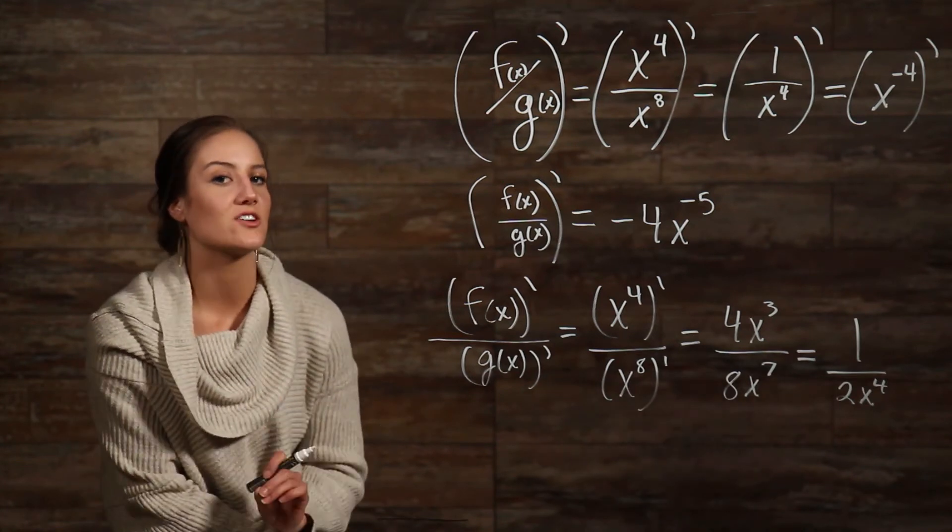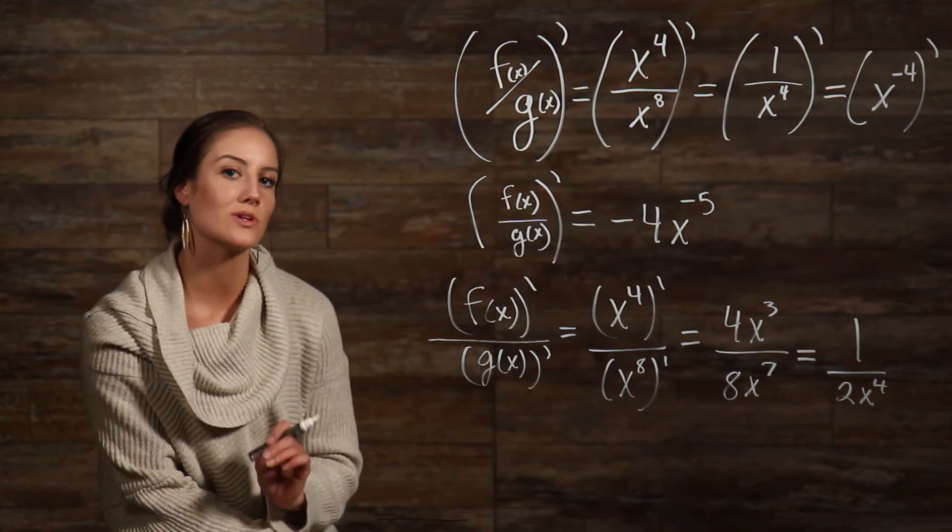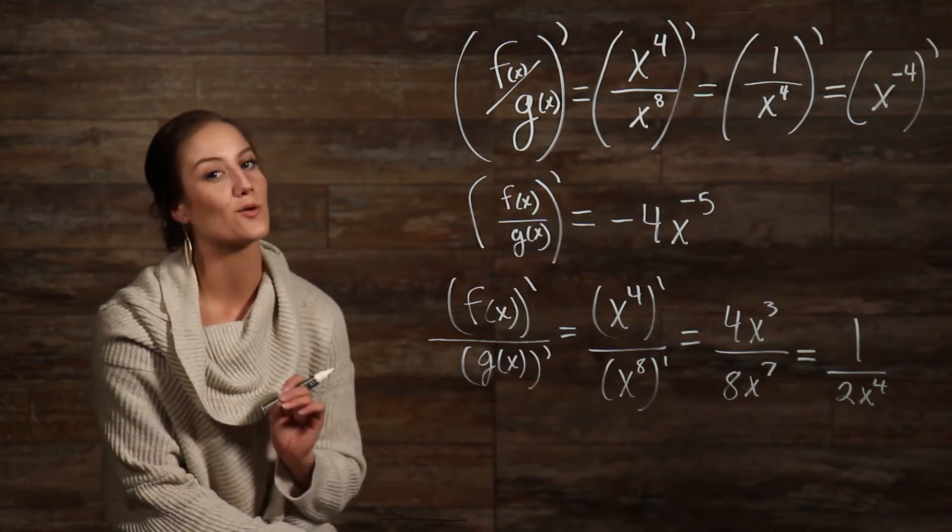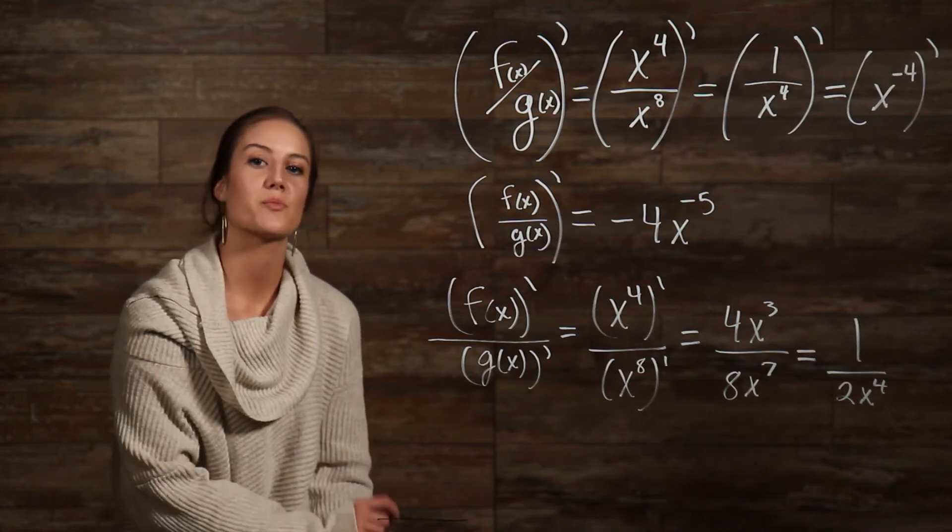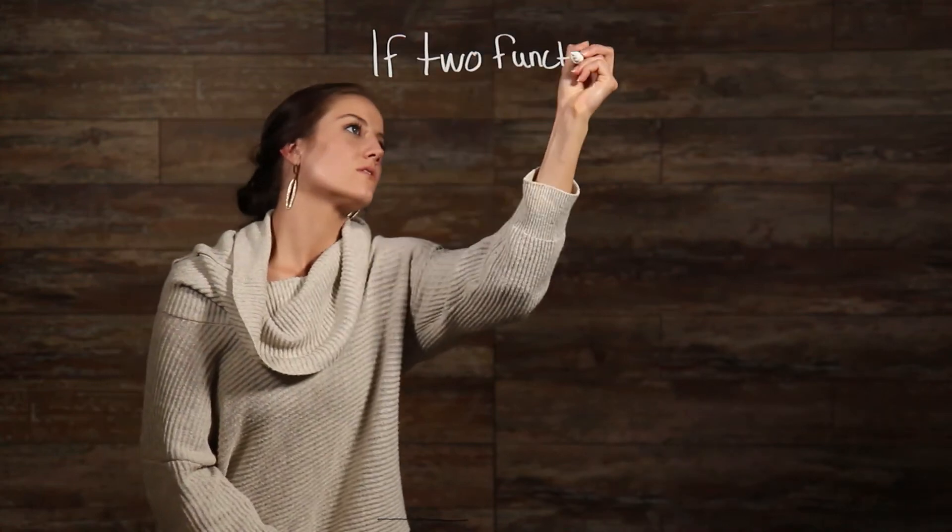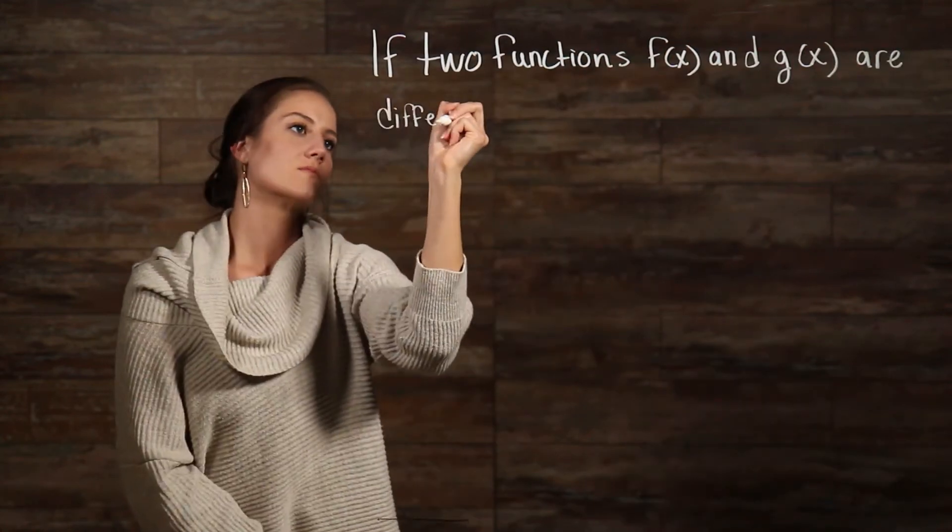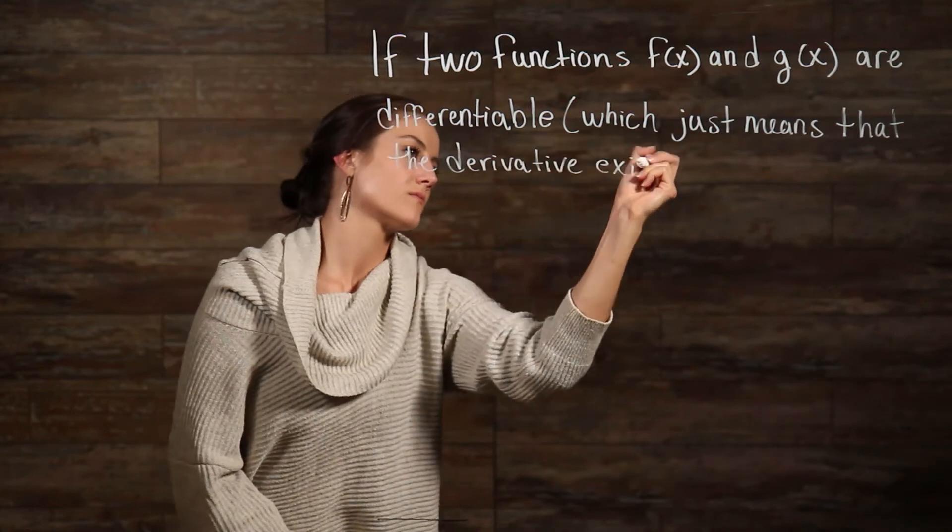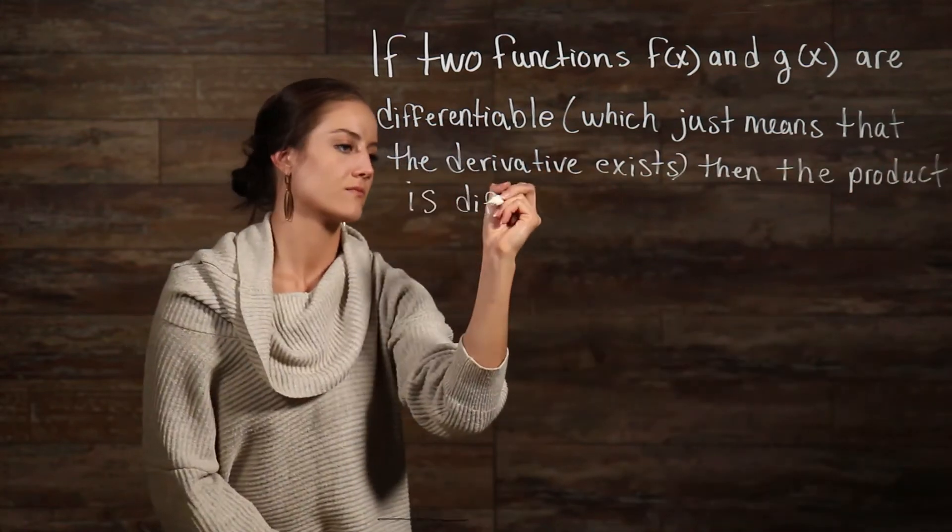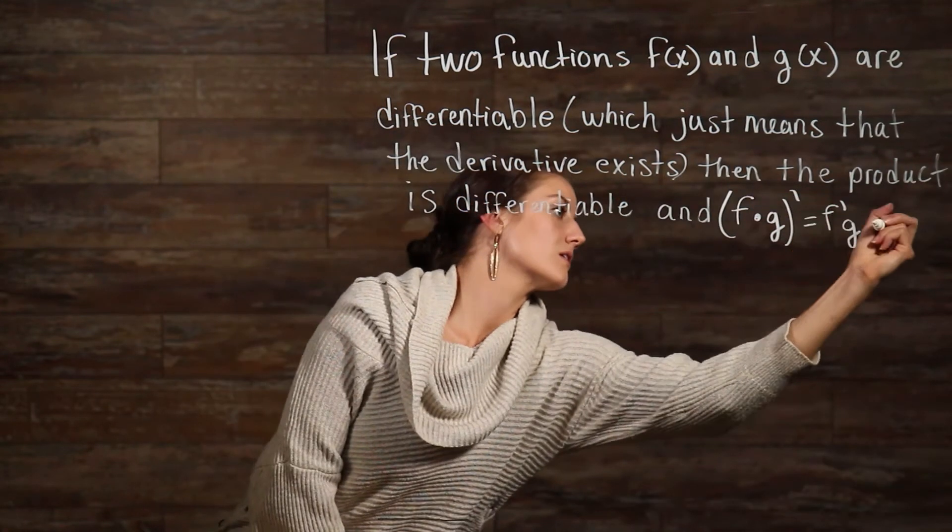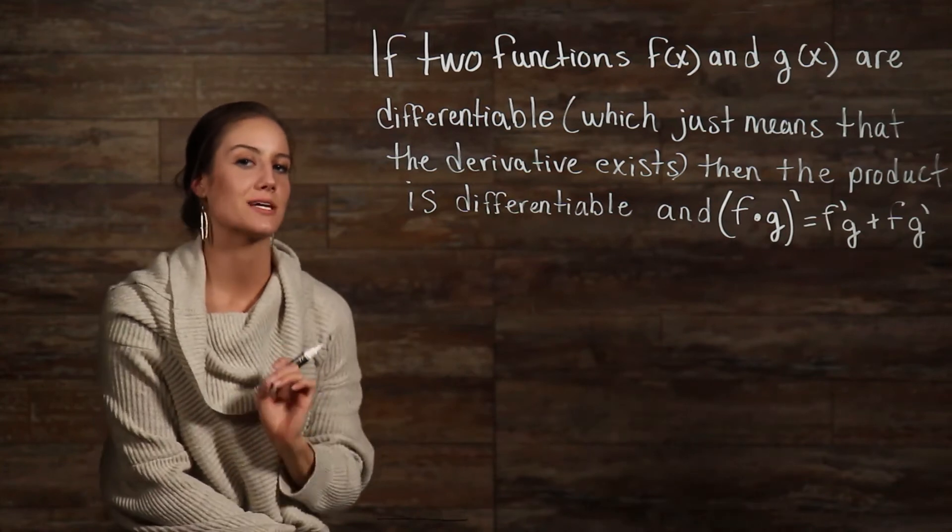So, in order to take the derivative of functions with products and quotients, we'll need to use the product rule and the quotient rule. Here's what the product rule states. Now, let's take a look at how to apply this.